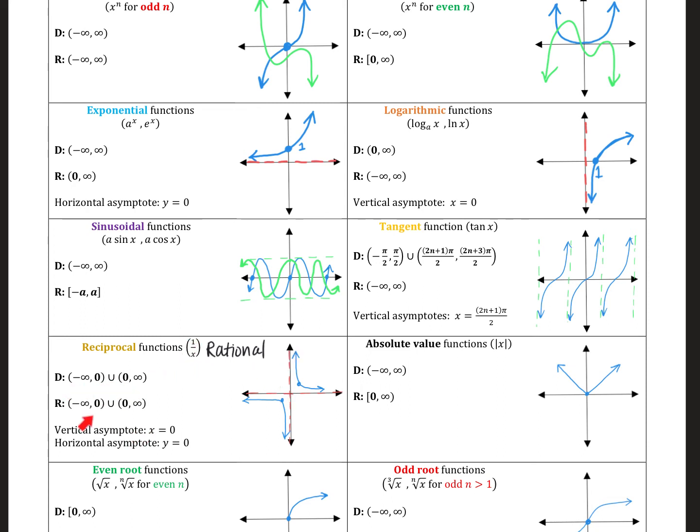So this basic 1 over x, here's the domain and range. It's all real numbers except 0 because of this vertical asymptote. The range is all real numbers except 0 for that horizontal asymptote.